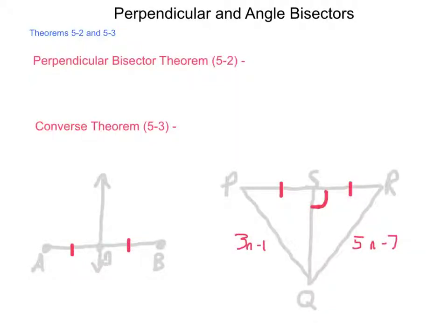In this lesson, we're going to be looking at perpendicular and angle bisectors. With this, we're going to get quite a few theorems: Theorems 5-2, 5-3, 5-4, and 5-5.